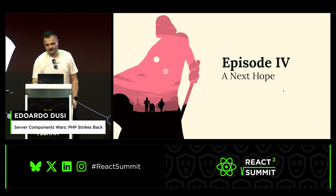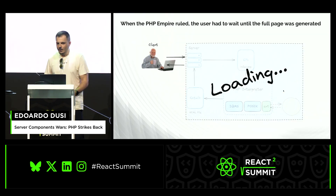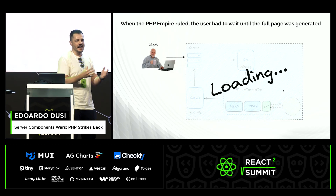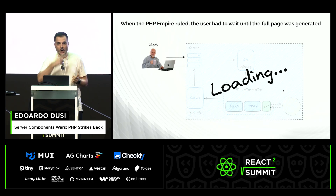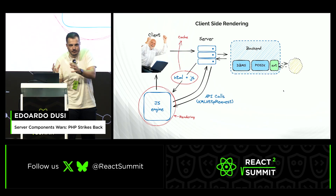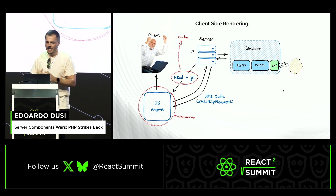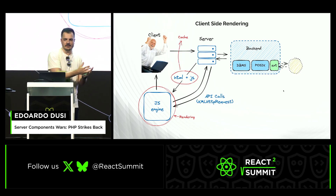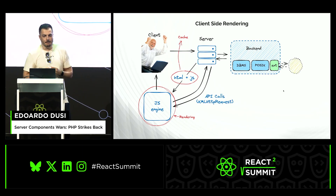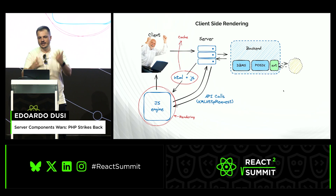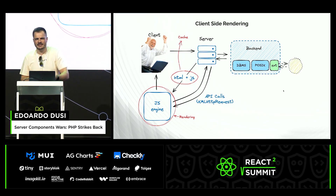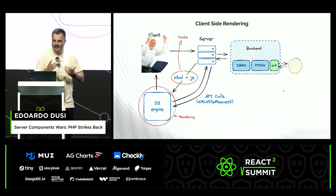Now we go to the next episode: A New Hope. When the PHP empire ruled, the problem was that when you made a request from the client, you had to wait until the whole processing on the server completed. So we came up with a clever solution — we moved the rendering to the client. We still have a request to the server, the server returns HTML and JS, but now the JS is rendered on the client. All the rendering happens on the client level, though we still have to make calls back to the server to fetch data.